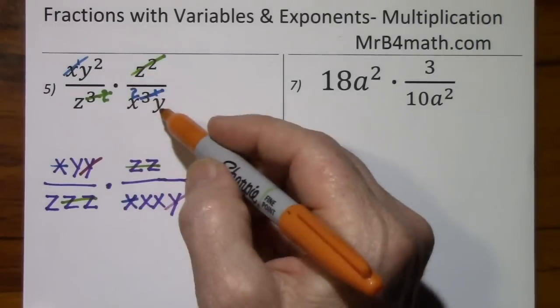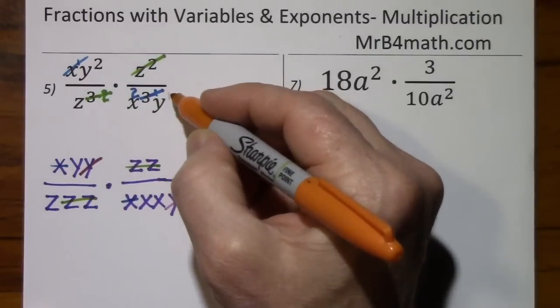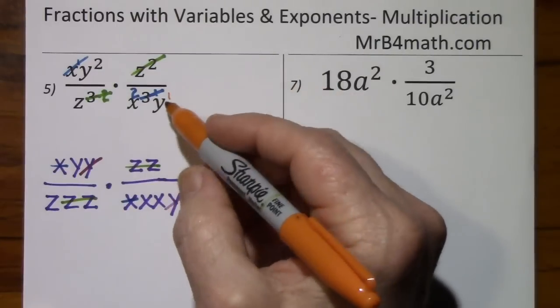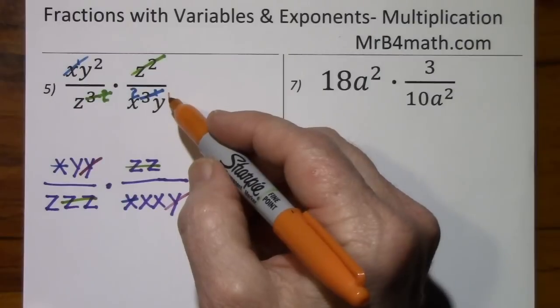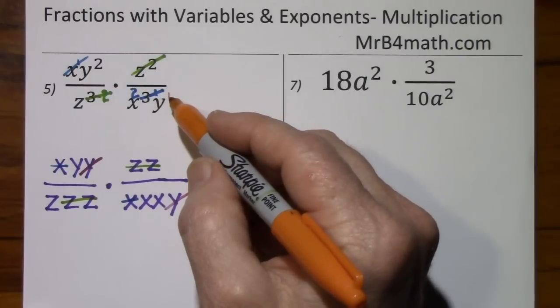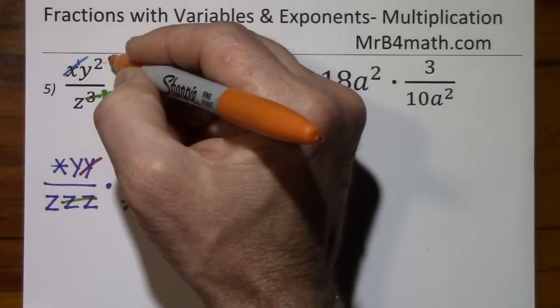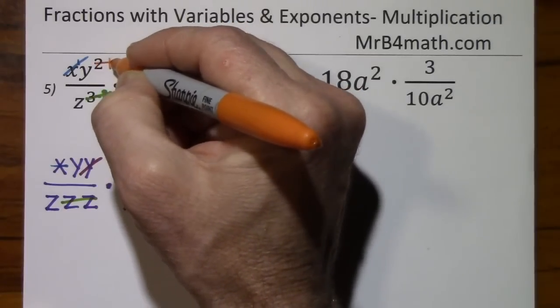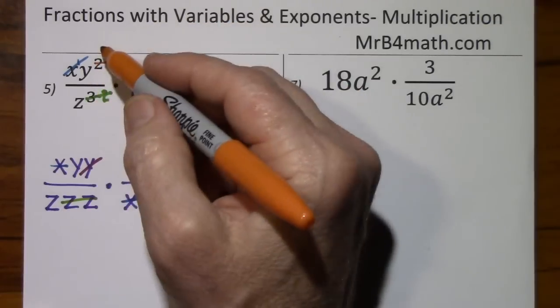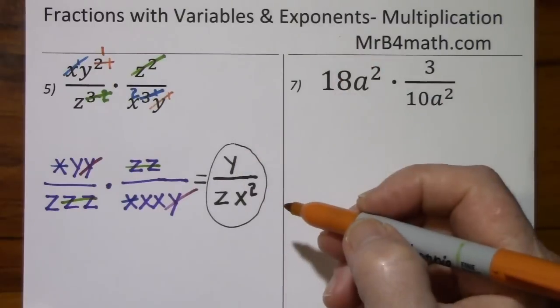And then with the y's, this is y to the first. So the one to the lower power, the one to the smaller power, is going to disappear. So y to the first is gone. Subtract one, and you're left with y to the first in the numerator. That's exactly what we have here.